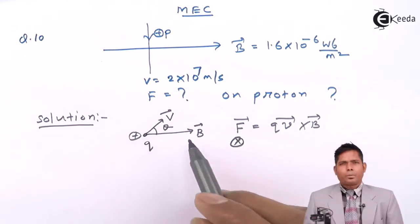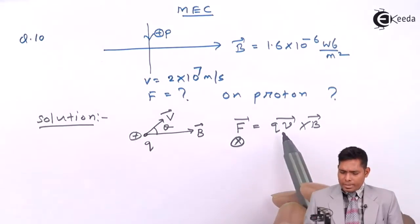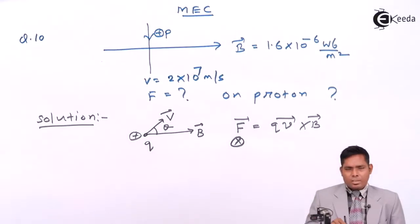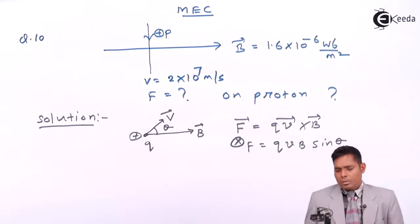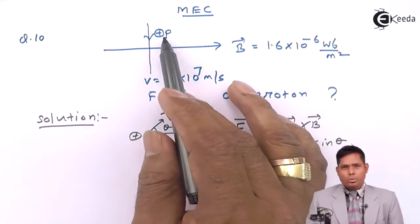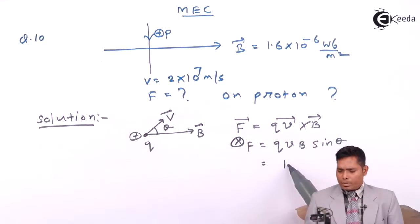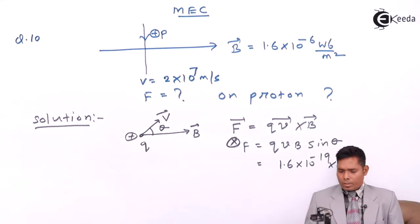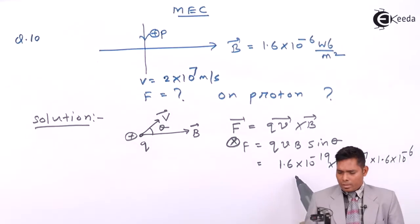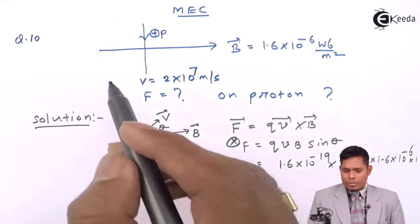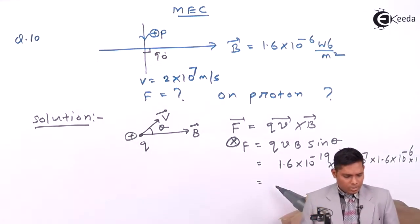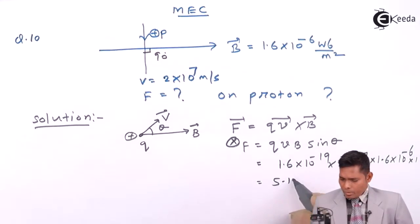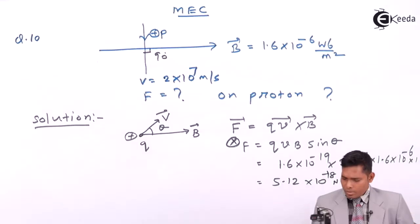We are interested in the magnitude of the force. At that instant, the force is vertically downward and the magnitude is given by F = QVB sinθ. Everything is given: Q is the charge of the proton, which equals 1.6×10⁻¹⁹ coulombs; V is 2×10⁷ m/s; B is 1.6×10⁻⁶ Tesla; and sinθ = sin90° = 1, because the angle is 90 degrees. The answer comes out to be 5.12×10⁻¹⁸ Newton.